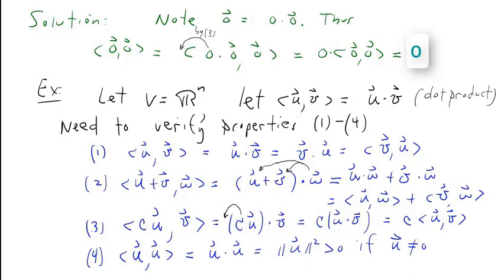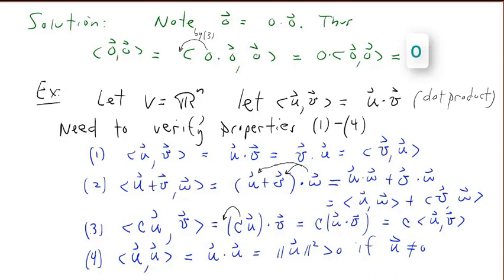Property four: the inner product of u with itself is just the dot product of u with itself, which is the length of u squared, and that's greater than zero for any non-zero vector u in R^n. Therefore, all required properties are satisfied, and this is indeed an inner product.